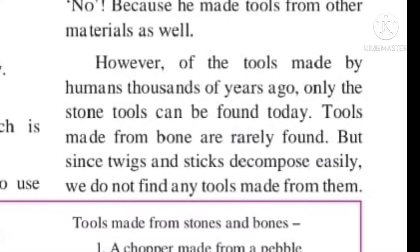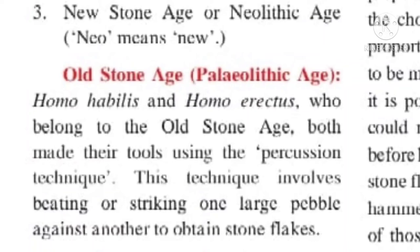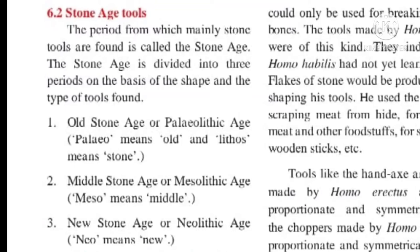The period from which mainly stone tools are found was known as the Stone Age. The Stone Age is divided into three periods on the basis of the shapes and types of tools found. First is the Old Stone Age or the Paleolithic Age — 'paleo' means old and 'lithos' means stone. Second is the Middle Stone Age or Mesolithic Age — 'meso' means middle. Third is the New Stone Age or Neolithic Age — 'neo' means new. Let us see all these stages one by one.